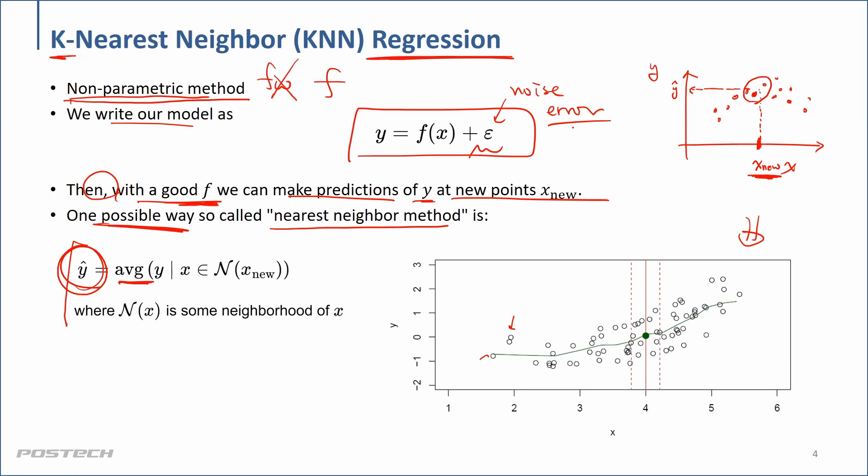I guess this is a very natural way of thinking, even for regression problems. The good thing about KNN is we don't have to build a model. We don't have to have parameterized approximation functions.